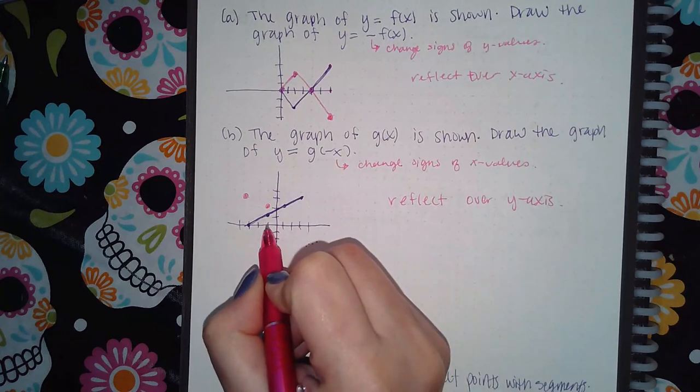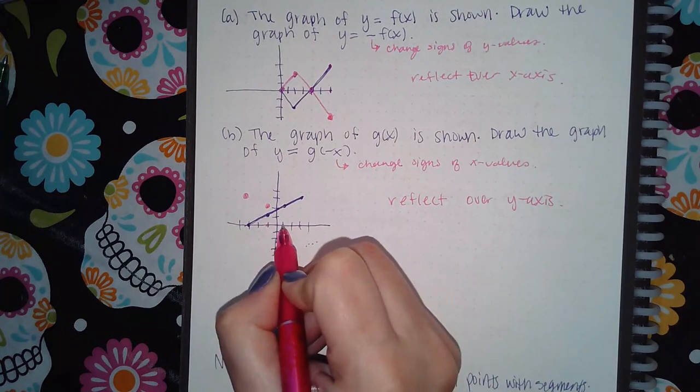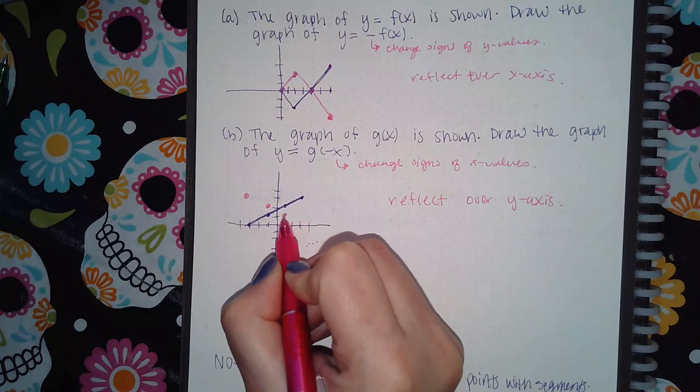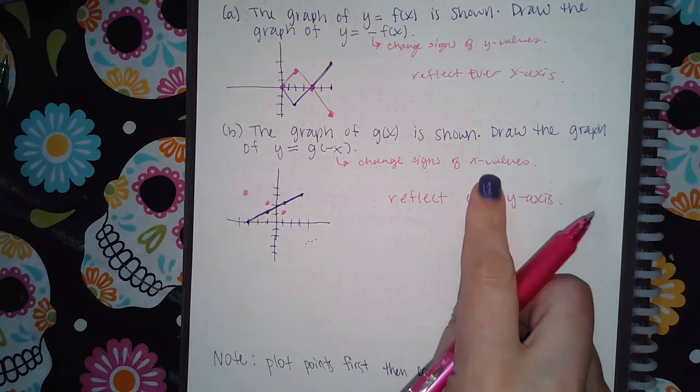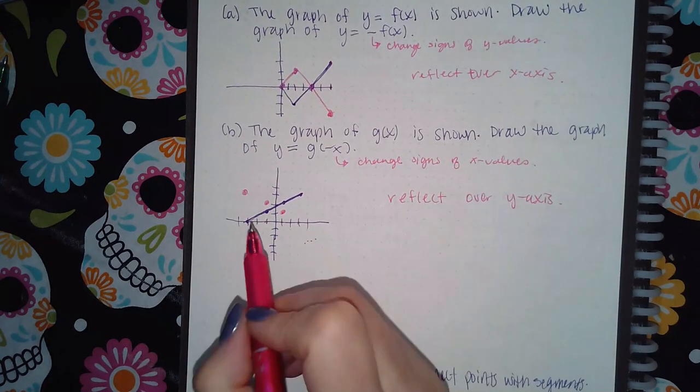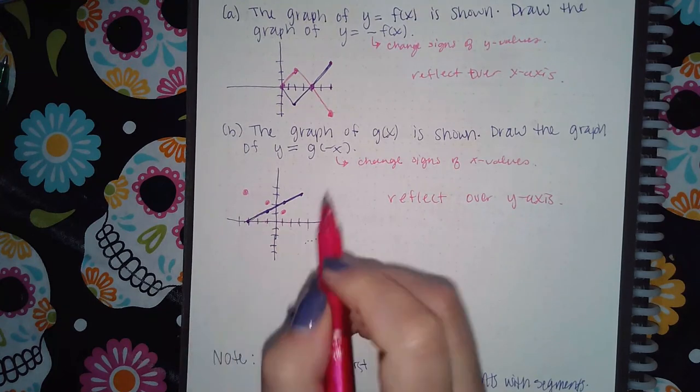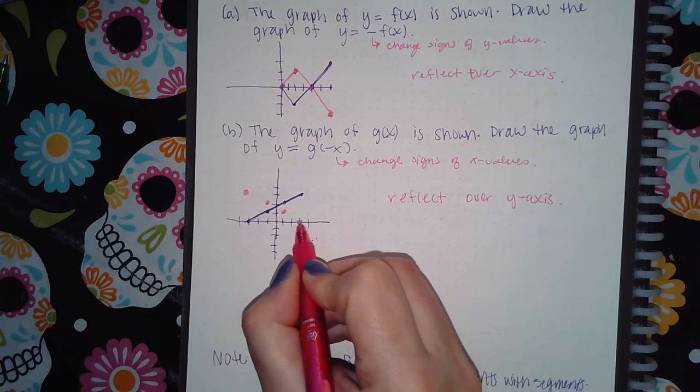This here was negative 1 and 1. It's now going to turn into positive 1 and 1, because all I'm doing is changing the signs of the x value. Here it was negative 3 and 0, but now the x value changes to positive 3 and 0.